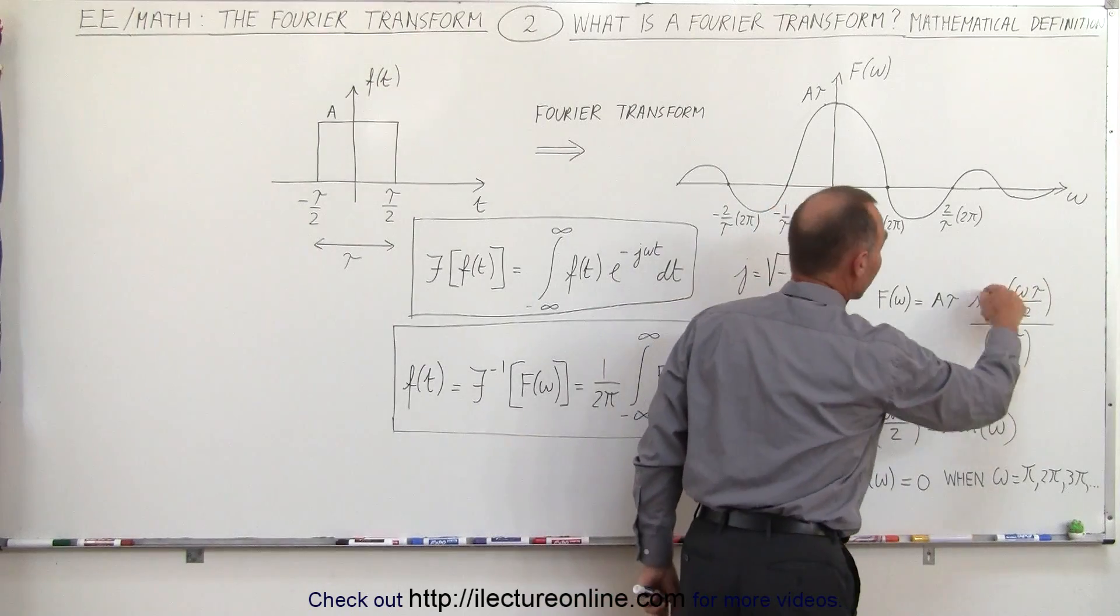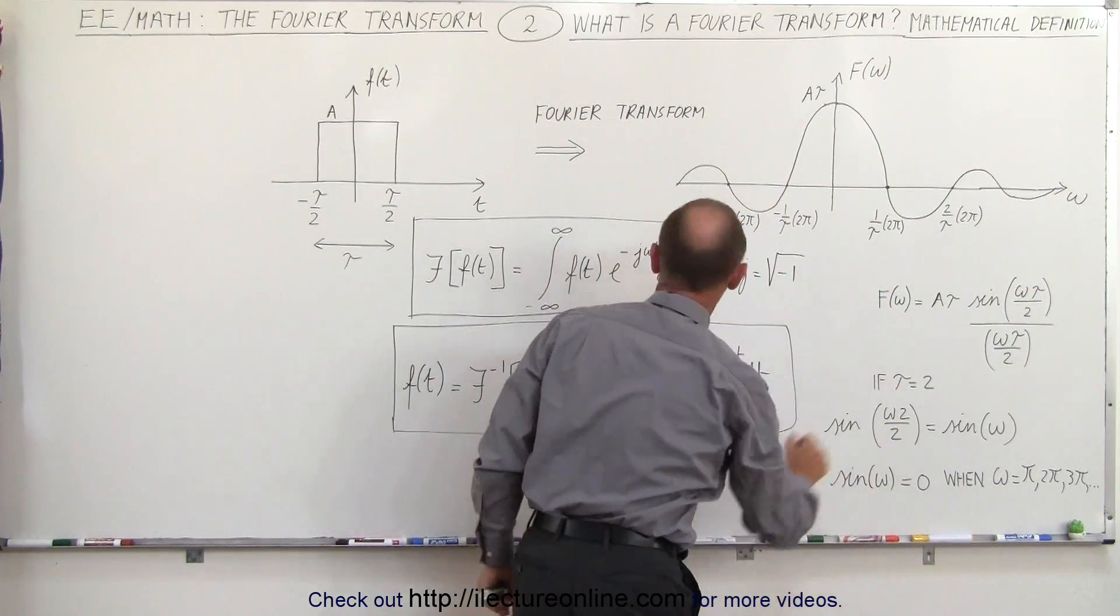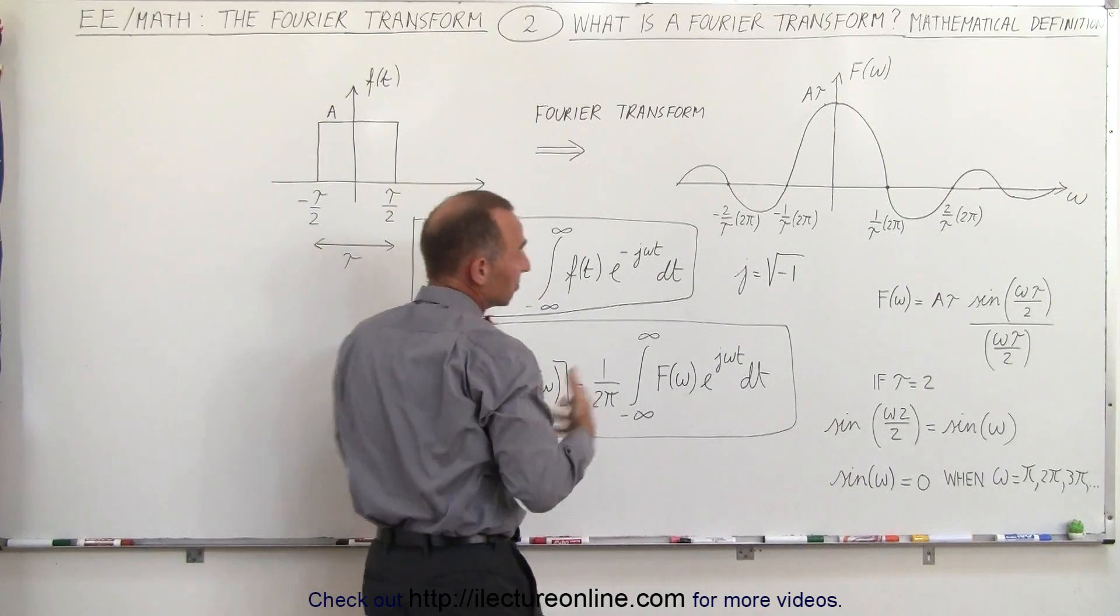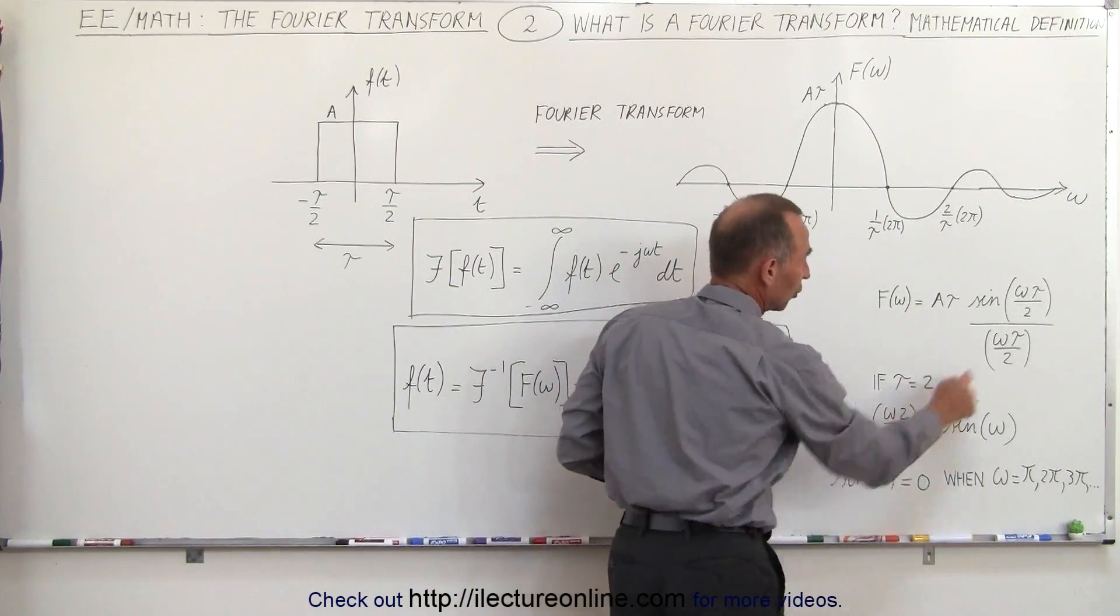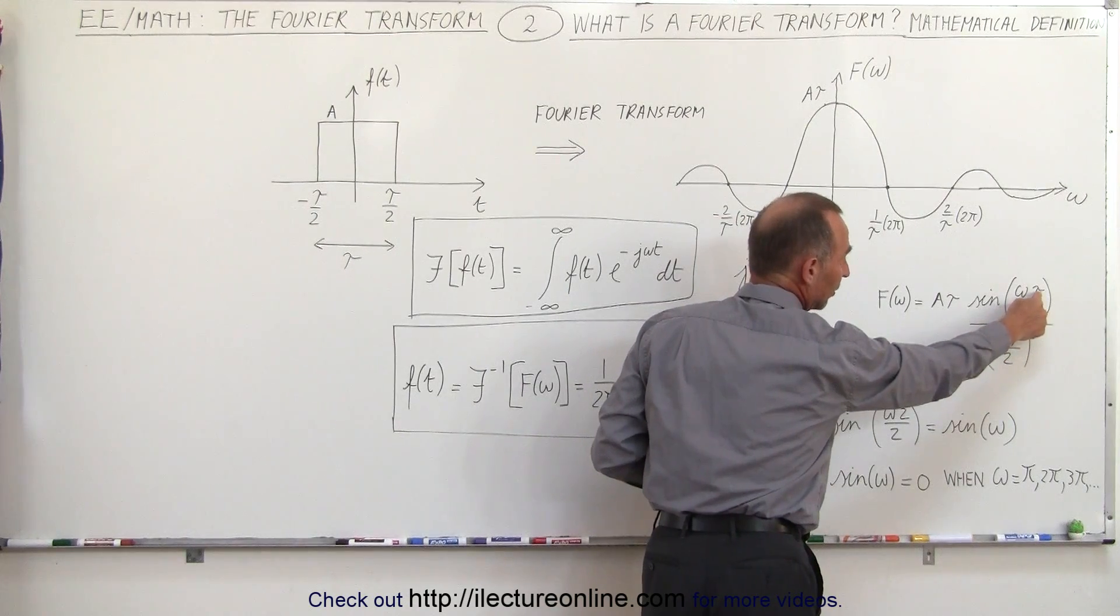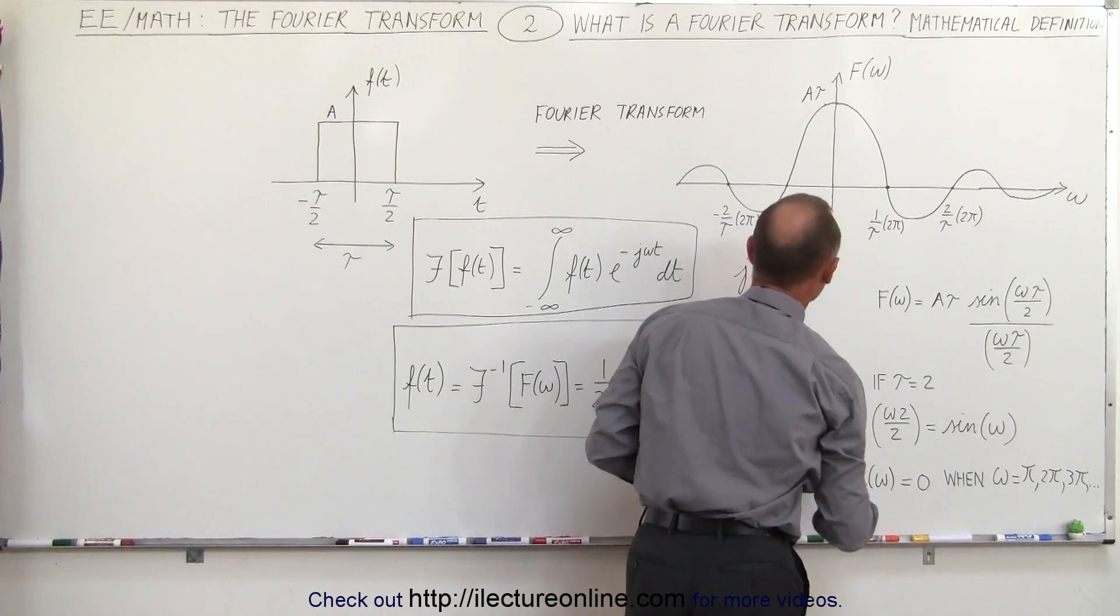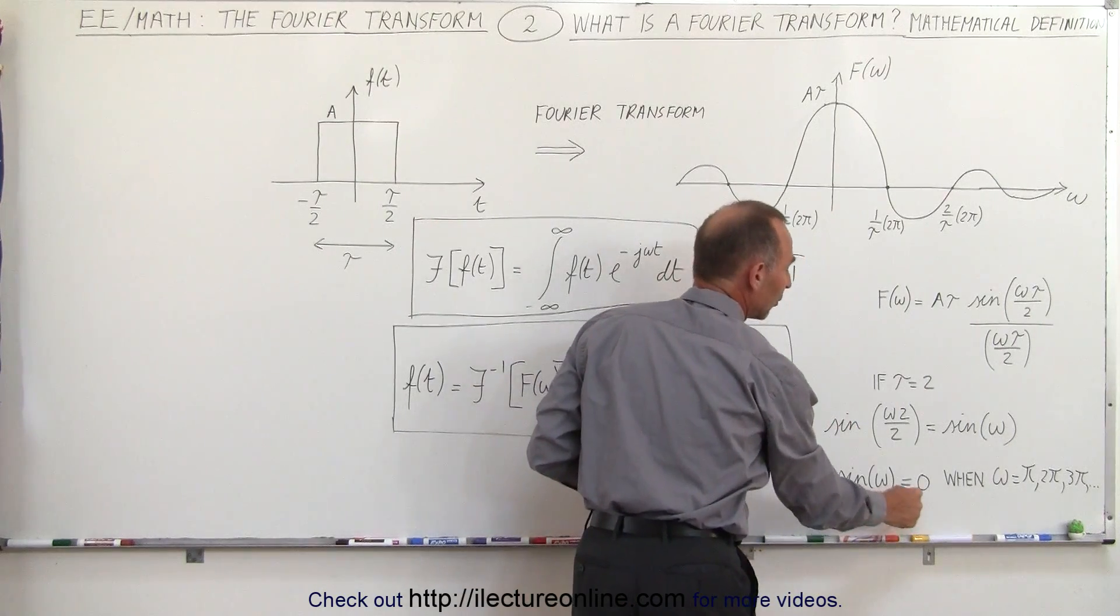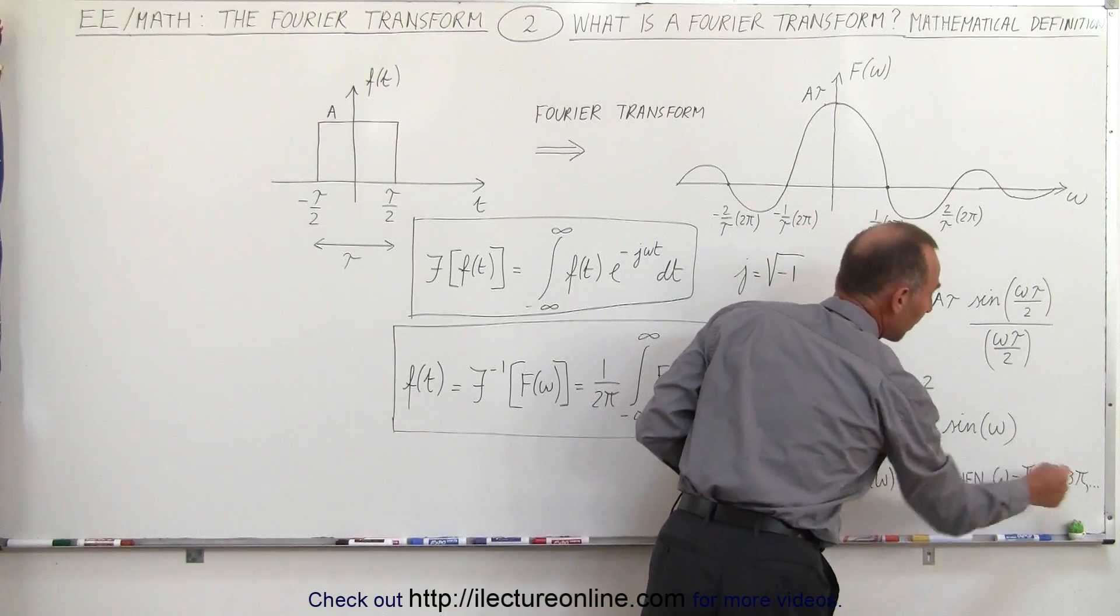Now it turns out this is the sinc function and this is what a sinc function looks like. Now let's say that tau the width here is equal to 2, like 2 seconds. That means that the sine of omega 2 over 2, so I plug in 2 here, the sine of omega 2 over 2 is equal to the sine of omega. And we know that the sine of omega equals zero when omega equals pi, 2 pi, 3 pi and so forth.